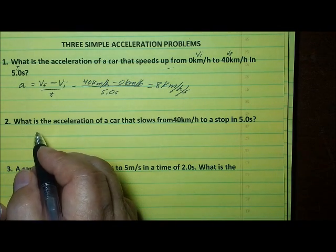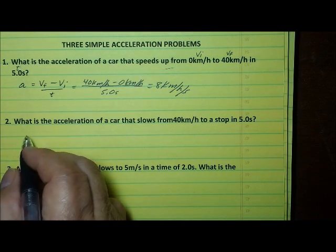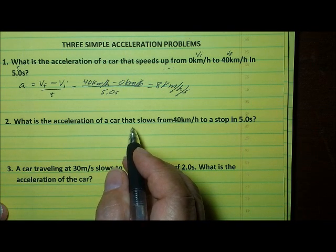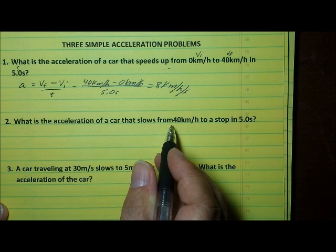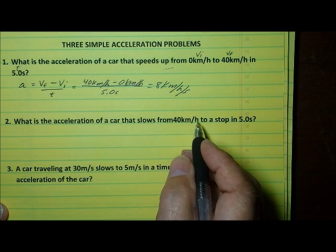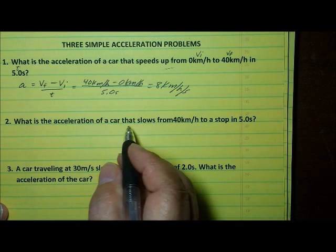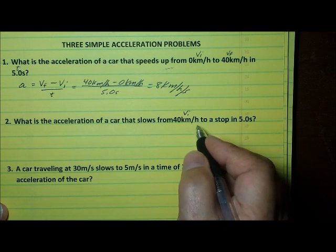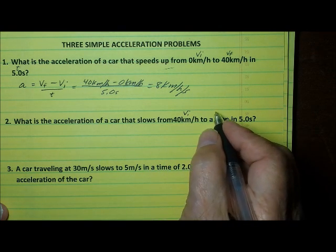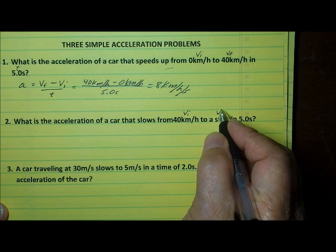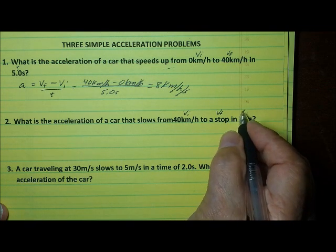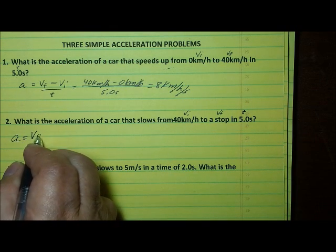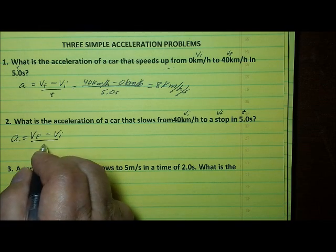The second question is a little bit different, but we can still use the same equation. In this problem, the initial velocity is 40 kilometers per hour. What is the acceleration of a car that slows from 40 kilometers per hour to a stop — that's 0 kilometers per hour, our final velocity — in 5 seconds? We can use the same equation: a equals v sub f minus v sub i divided by t.